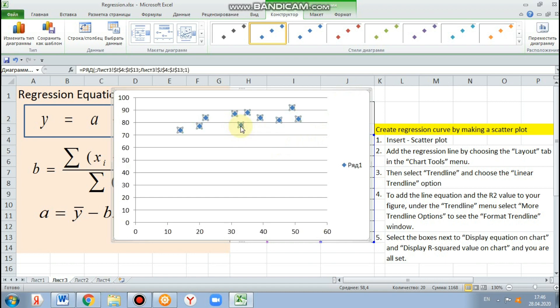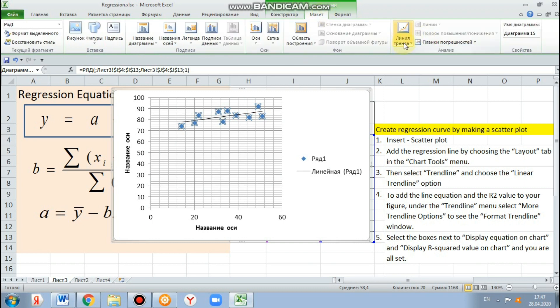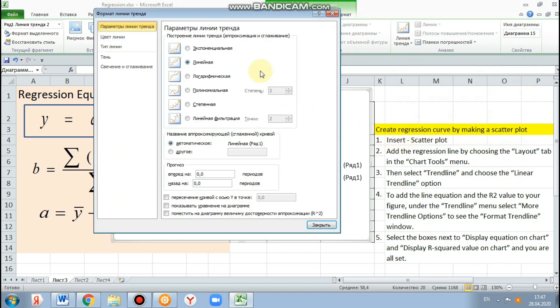After we choose chart tools. Next, layout, trendline, more trendline options. And you can see the format trendline window.